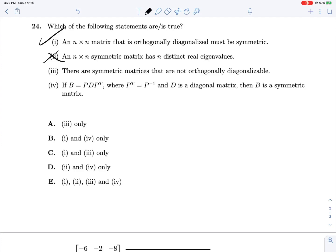What about 3? There are symmetric matrices that are not orthogonally diagonalizable. Well, nope, because the spectral theorem says for any symmetric matrix, it is orthogonally diagonalizable. So, false.